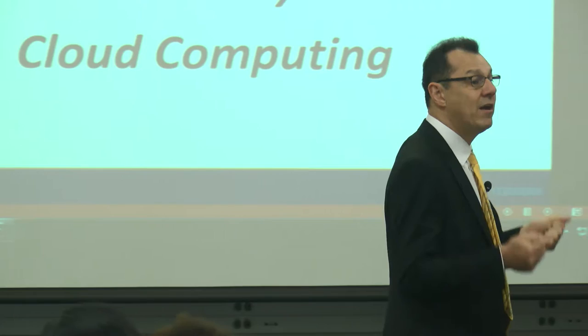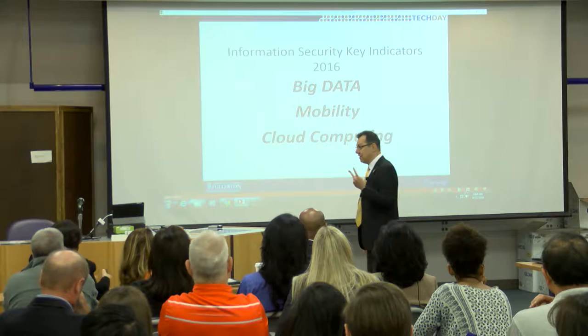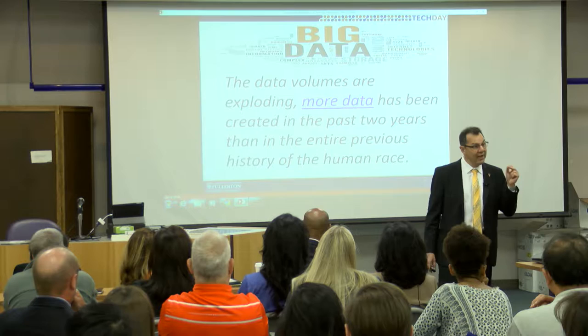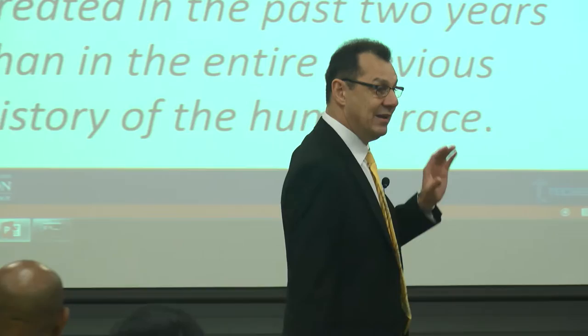Number one: big data. Those of you who don't know what big data is — we generate lots of data every day. In the last two years, we have generated enough data to equal the entire history of the human race. And that's going up exponentially. So your data, your privacy, your information is going to be all over the place moving forward.